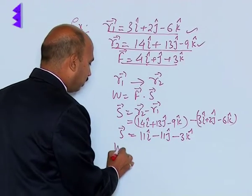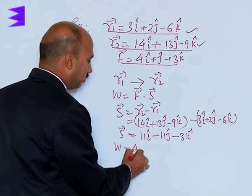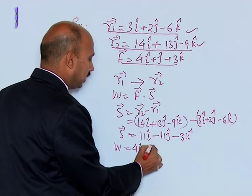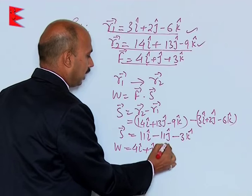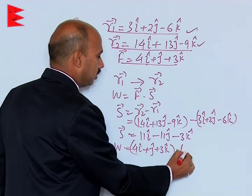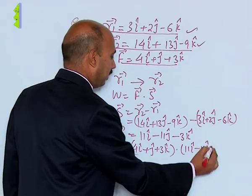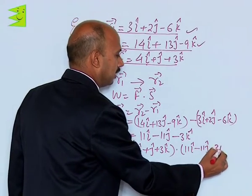Work done is equal to F dot S. That means 4i + j + 3k dot 11i minus 11j minus 3k.